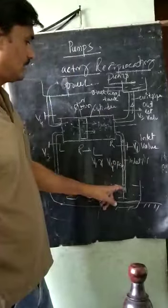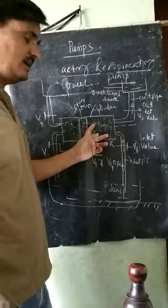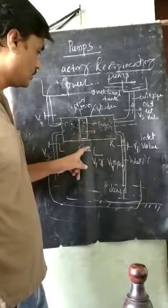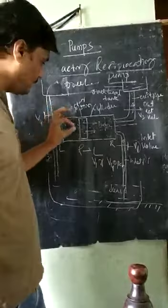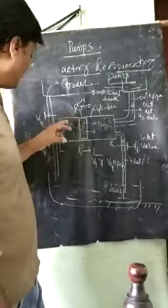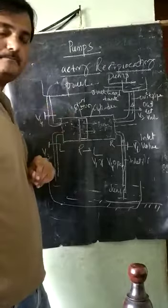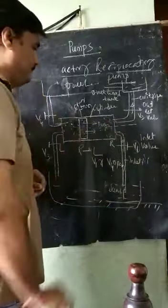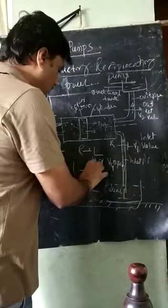When the piston moves from R to L: water is entering inside the cylinder through P1, and water already available in the cylinder is energized and goes through P4 to the overhead tank.